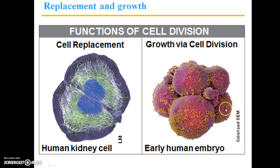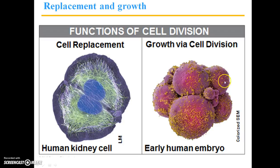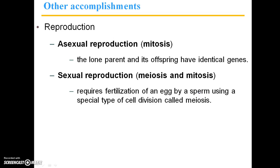This process here would be mitosis, because the sperm and egg had already come together, and it started out as a single cell, and now it's growing through division.